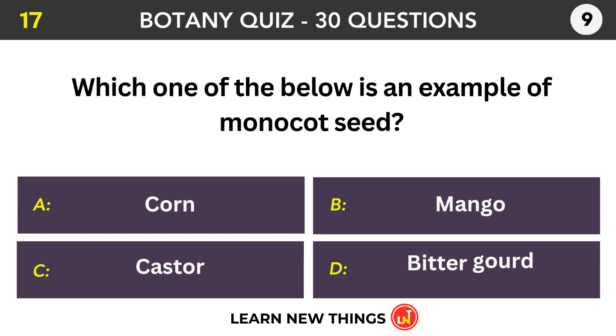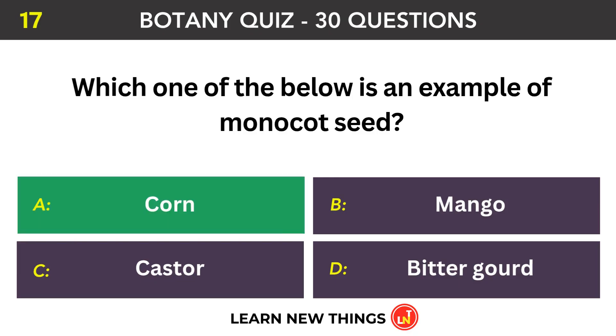Which one of the below is an example of a monocot seed? Corn.